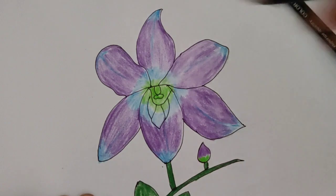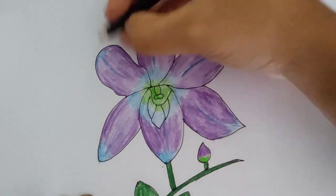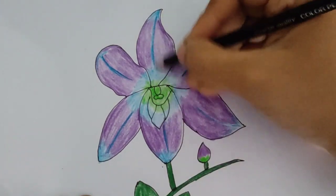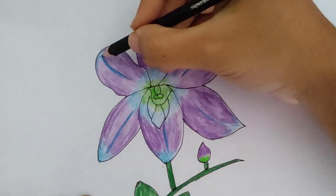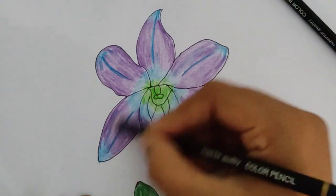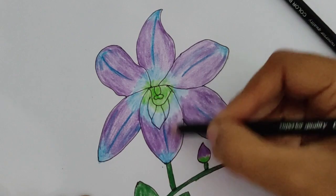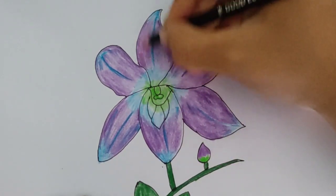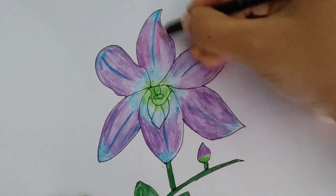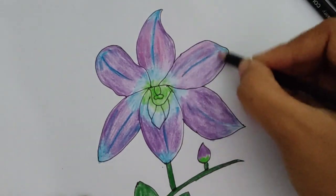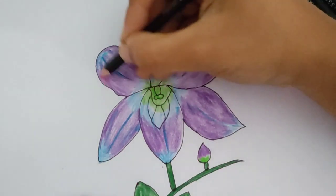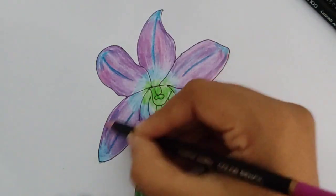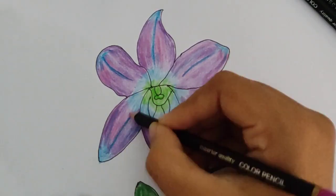White orchid symbolizes innocence and purity as well as elegance and reverence. Pink orchids symbolize femininity, grace, and joy. Yellow orchids symbolize friendship and new beginnings. They make great gifts for a friend to celebrate an accomplishment. Purple orchids symbolize royalty and admiration and are traditionally given as a sign of respect. Orange orchids symbolize pride, enthusiasm, and boldness.